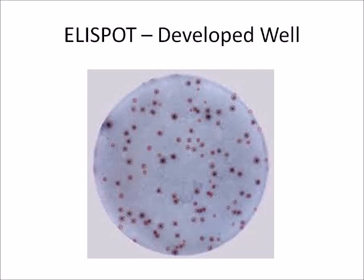This is how a LESPOT developed well will look like. You can see the spots here, which represent the signal from the detected proteins. The secondary antibody produces spots like these, which are bound to a PVDF or nitrocellulose membrane in the well where the cells are grown and incubated with antibodies.